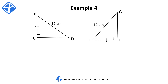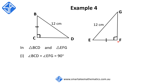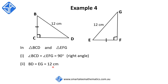For our fourth example, we've got two right-angle triangles: triangle BCD and triangle EFG. We begin with: in triangle BCD and triangle EFG. The first reason: angle BCD is equal to angle EFG, both equal to 90 degrees — right angle. The second reason: BD is equal to EG, both equal to 12 centimeters — these sides are both opposite the right angle, so they are the hypotenuses, and it's given.